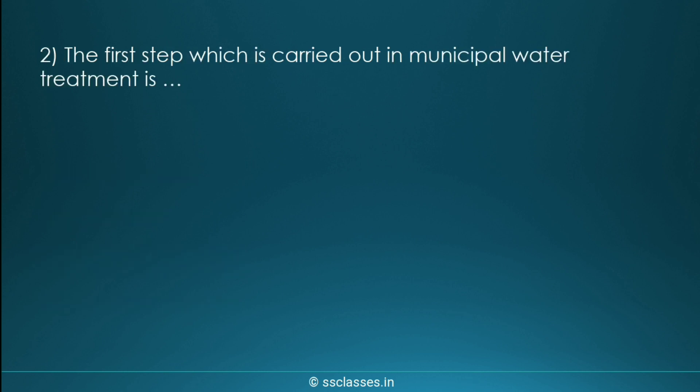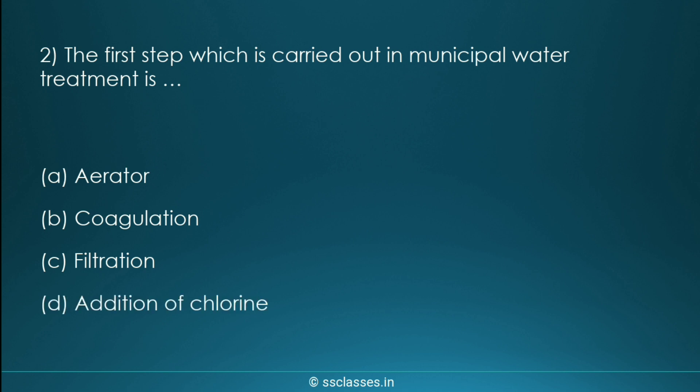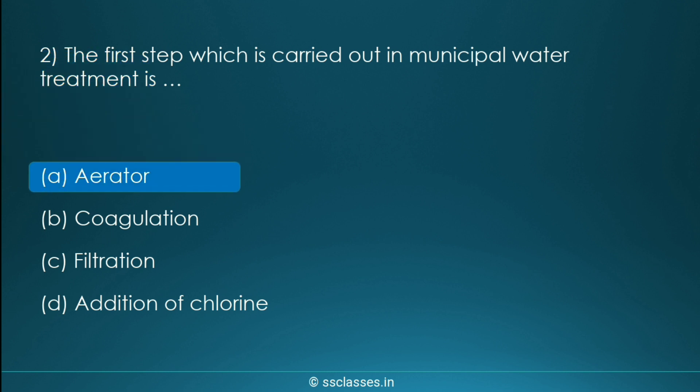Next question: the first step carried out in municipal water treatment is which? Options are aerator, coagulation, filtration, or addition of chlorine. The correct option is aerator — when water comes in contact with air, it removes volatile solids like H₂S and CO₂. That is the first step in municipal water treatment.